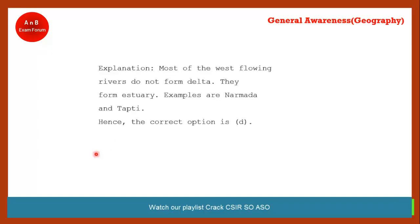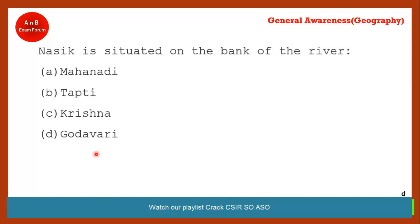Nasik is situated on the bank of which river? The correct answer is option D — Godavari. The origin of Godavari is itself in Nasik.